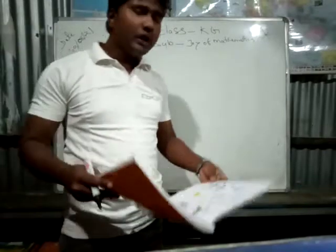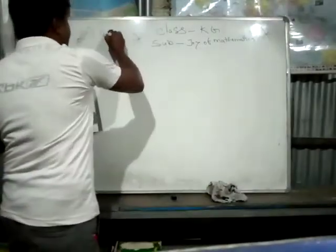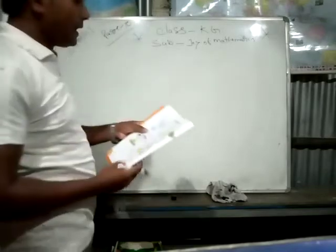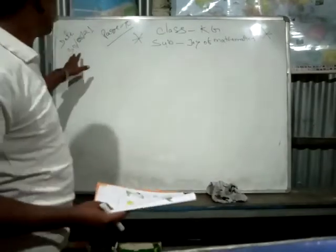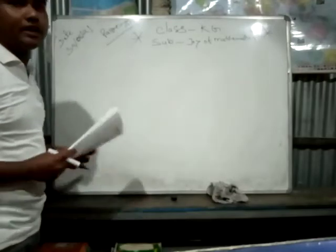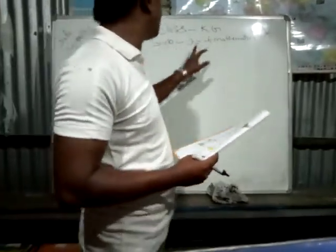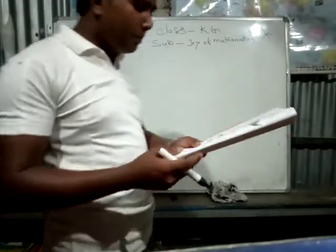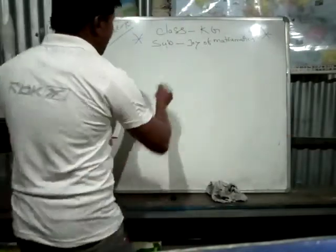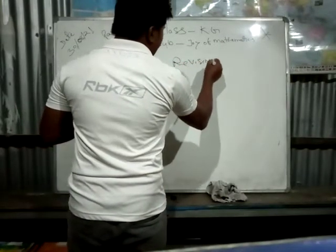Today we will do page number 10. Here I am writing page number 10. What is the date? 30th of August — 30th August 2021. And then class is Joy of Math subject. So page number 10 — what is there? Revision time. This is revision time.